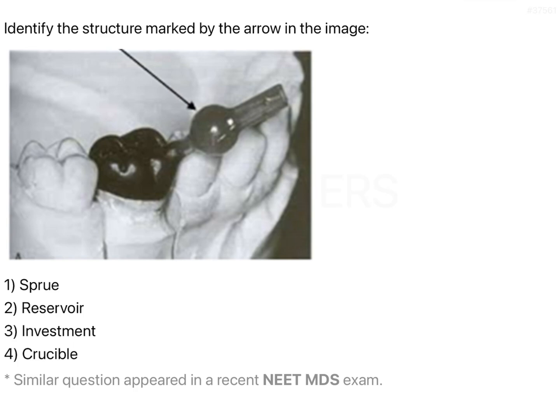Coming to the question: the sprue former is basically an inlet. It is going to be an inlet through which your molten alloy enters, and also allows the molten wax to escape out of the crucible. So the sprue former forms the entire area through which you have an inlet and an outlet — that is its primary function.